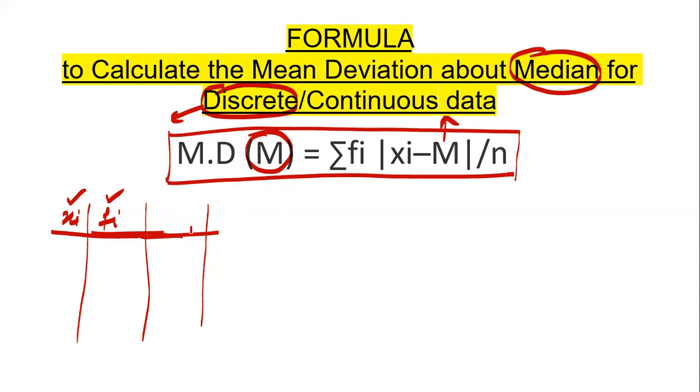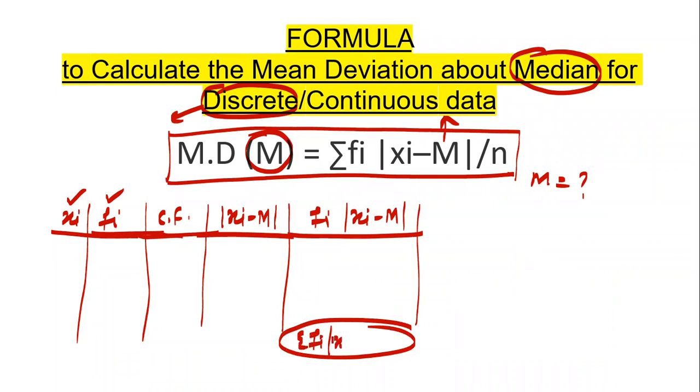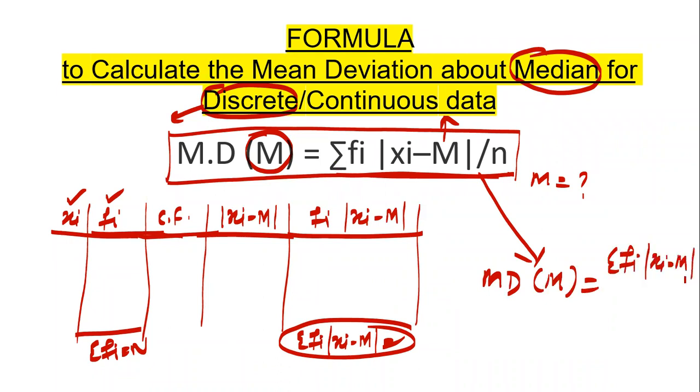For discrete data, we will find out median. For that cumulative frequency is required, then we will find out median. Next column would be absolute value of Xi minus M. M means median. And next would be Fi into Xi minus M. This is your summation Fi |Xi minus M|. This is N. And we will substitute the value of these. And you will get mean deviation about median. And it would be summation Fi |Xi minus M| upon summation Fi, which is equal to N.